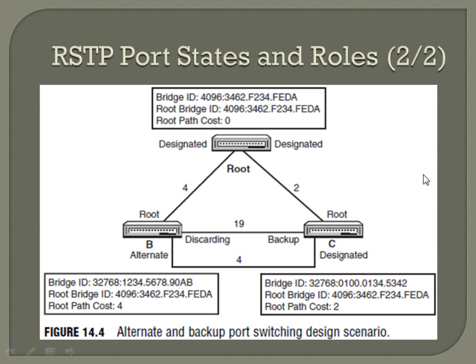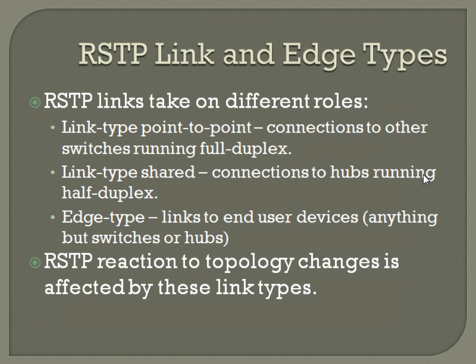RSTP link and edge types — RSTP links take on different roles based on their types. Link type point-to-point refers to connections to other switches, and it's always running in full duplex. Link type shared refers to connections to hubs, which are always running in half duplex. Edge type refers to links to end-user devices — anything other than switches or hubs.